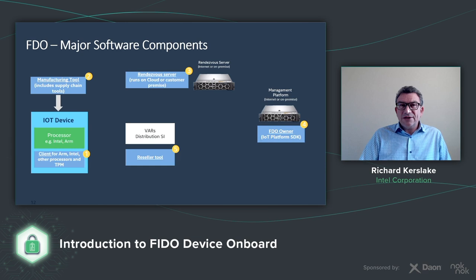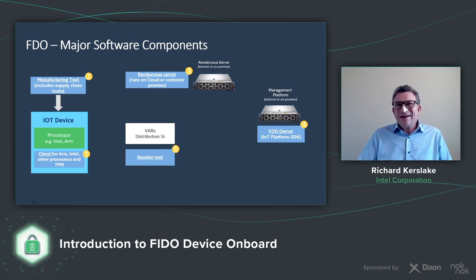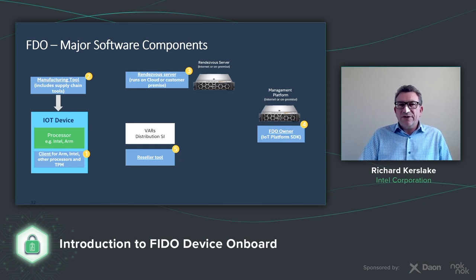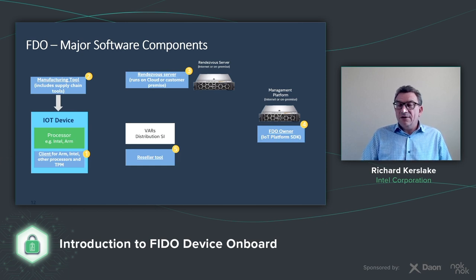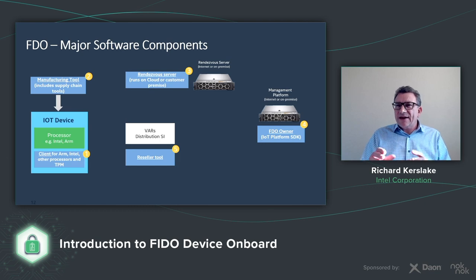We've obviously got the rendezvous server for the redirect. This is a low-compute platform — it doesn't need a lot of horsepower, and we do demonstrations running on really small IPCs to prove it. There's really not a lot of high-level compute required because it's really just doing this redirect. Then of course you've got the owner itself, the platform that you're going to onboard to. One element not mentioned earlier is that in the supply chain you may have multiple people, and the FDO specification provides the capability for them to take the ownership voucher when they take ownership of the box, extend the ownership voucher, and pass it to the next person in line. So they're basically signing it and passing it on — I think of it a little like those Russian dolls, how they kind of nest within a nest.